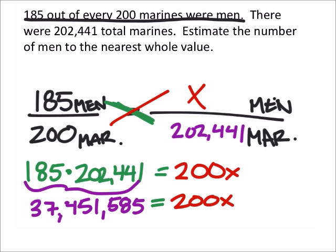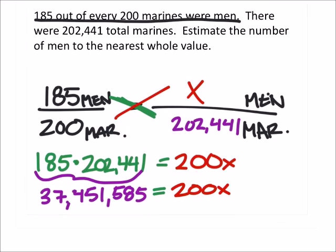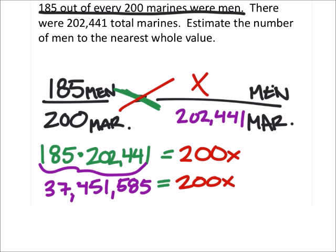Now x represented the number of men in comparison to the total amount of marines. So in order to solve this one, all we need to do is divide both sides by 200.